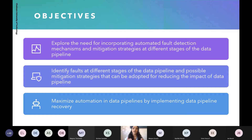The second objective is to identify the typical faults at different stages of the data pipeline and possible mitigation strategies that can be adopted to reduce the impact on data pipelines. The third objective is to maximize automation of data pipelines by implementing data pipeline recovery.